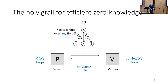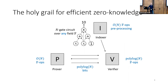The verifier actually has to read the statement being verified in full. So to achieve polylogarithmic verification time, we also add an indexer who pre-processes the entire circuit once for the verifier, so the verifier doesn't have to read the whole thing. After this linear time pre-processing has been done, the verifier can run in polylogarithmic time. This would be our target.